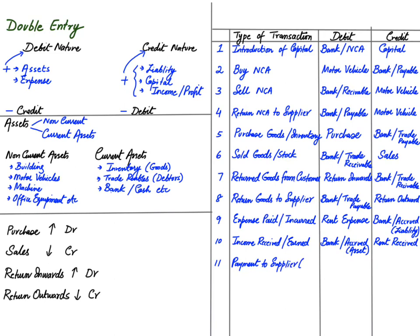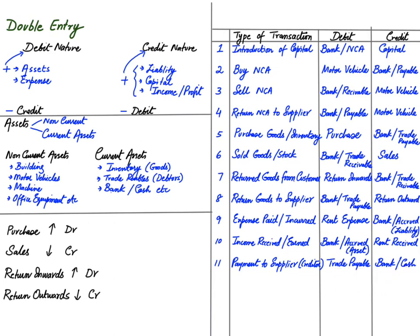Payment to supplier: whenever we have bought goods on credit, sooner or later we have to pay back the supplier the amount due. A liability is always credit, but if we are clearing our debt and extinguishing a liability, the liability is debited. The supplier account — Mr. XYZ — will be debited. If we are paying money by check, bank will be credited; if paying by cash, cash will be credited.